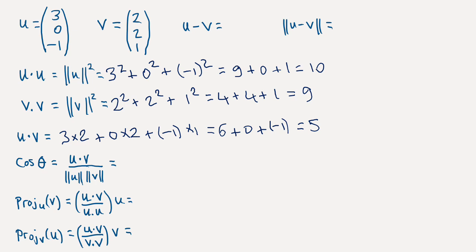Next let's calculate the angle between u and v. So we'll call that cosine of theta, and that's given by this formula here, dot product of u with v divided by the length of u times the length of v. So dot product of u with v, that was 5.